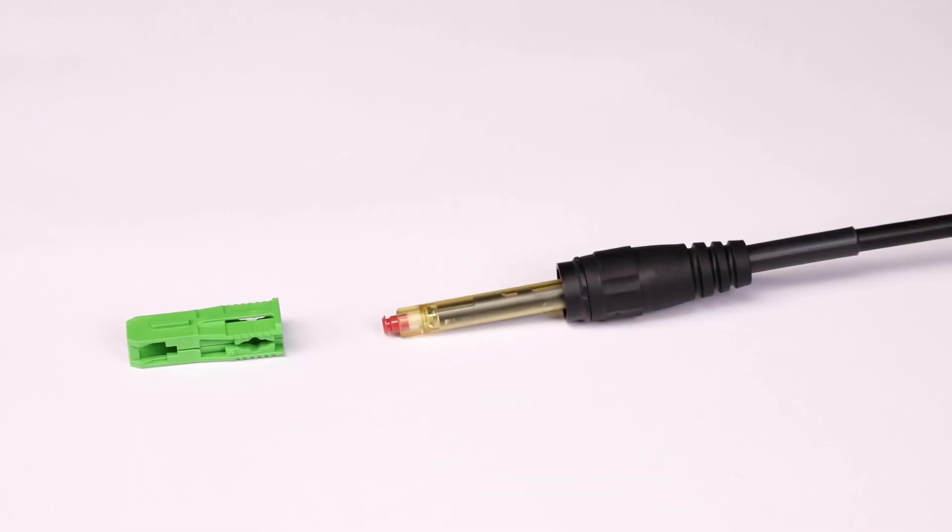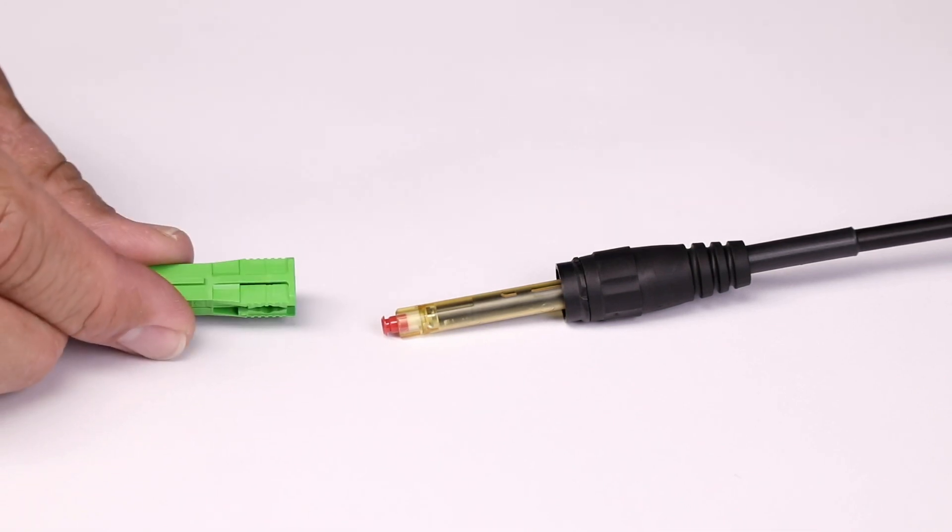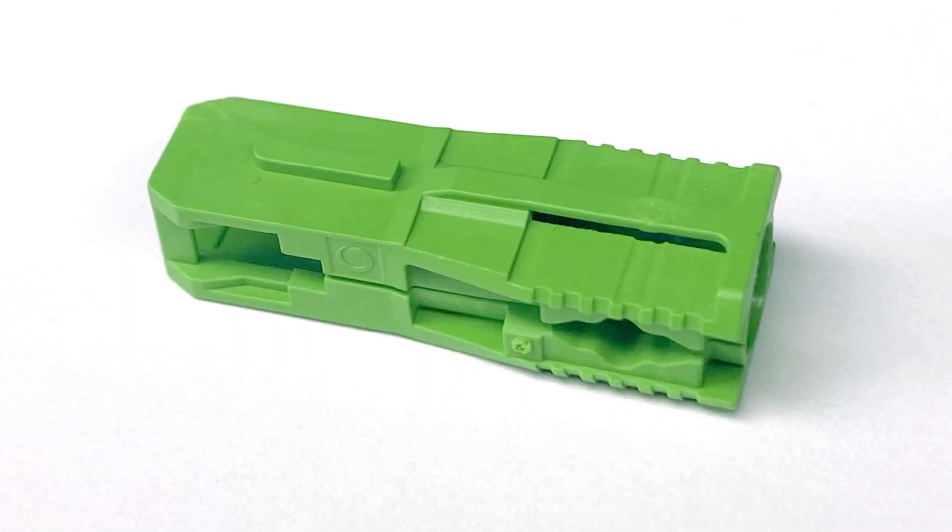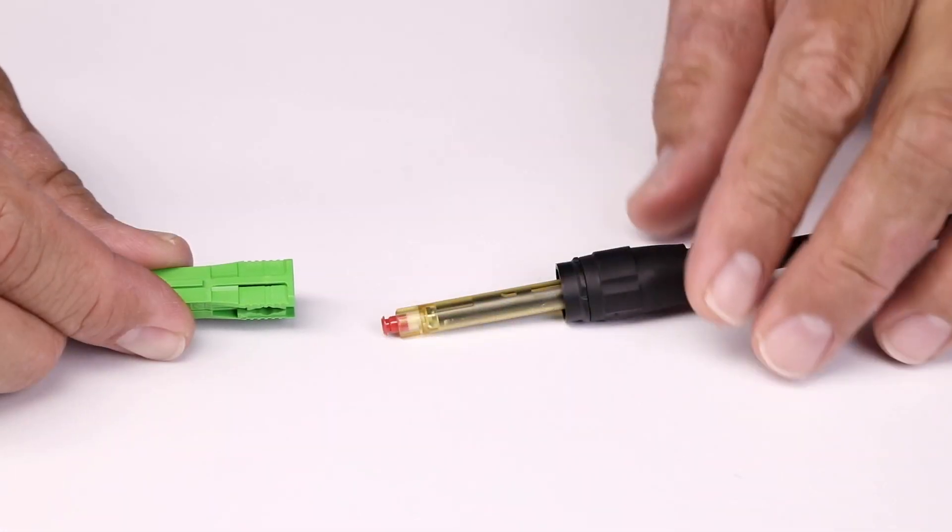To install the SCAPC connector converter, grasp the SCAPC connector converter body and find the alignment guide. Then find the alignment key on the Prodigy connector.